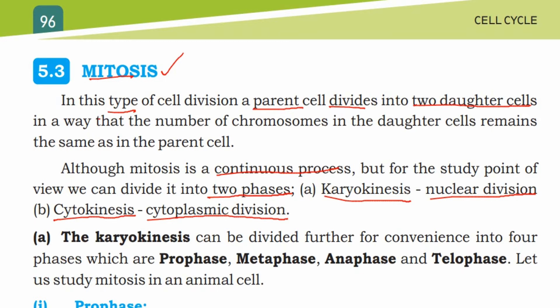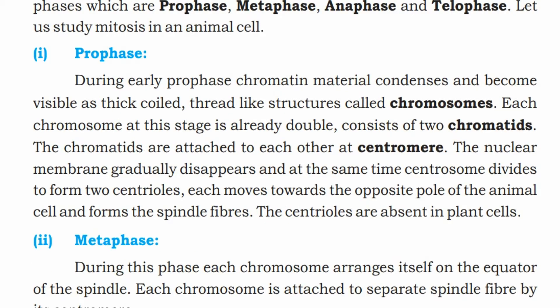The four phases of karyokinesis are prophase, metaphase, anaphase, and telophase. Let us study mitosis in an animal cell.